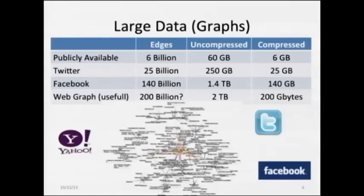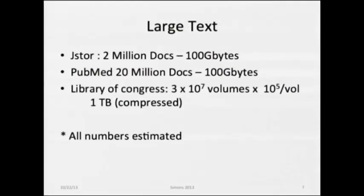You can also look at text. There's JSTOR—a broad collection of journal articles—and PubMed, which has more documents but each one is smaller, about the same total size. And there's the Library of Congress; you count the number of volumes and take an average number of characters per volume, assume you can compress it, and that's about the size—on the order of a terabyte of text.